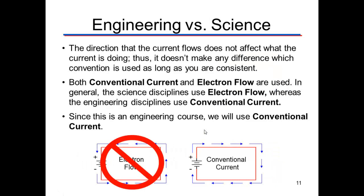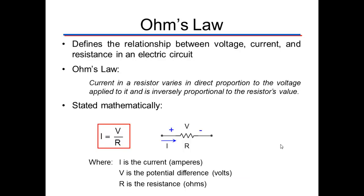Engineering versus science—the direction of current flow doesn't really affect anything. Science disciplines tend to use electron flow. However, engineers tend to use conventional current flow.